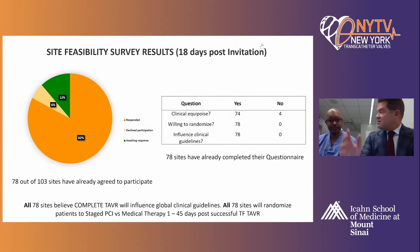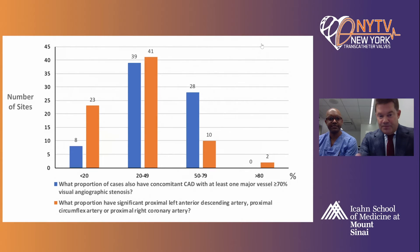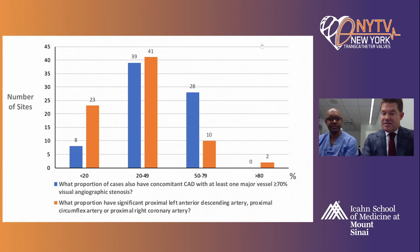We're also sending this survey to colleagues around the world to get a snapshot of practice at the start of 2021 with regards to CAD. What proportion of TAVR cases have concomitant CAD with at least one major vessel with greater than 70% visual angiographic stenosis? Approximately half have coronary disease — consistent with registry data. Similarly, approximately half have significant proximal LAD, circumflex, or RCA disease.